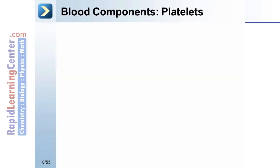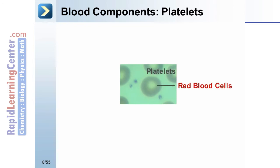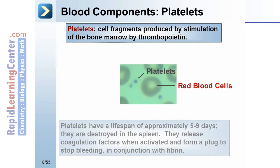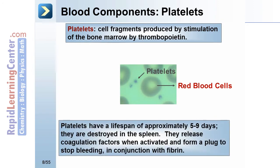Platelets are cell fragments produced by stimulation of the bone marrow by thrombopoietin. They have a lifespan of approximately 5 to 9 days and are destroyed in the spleen. When activated, they release coagulation factors and form a plug to stop bleeding, in conjunction with fibrin.